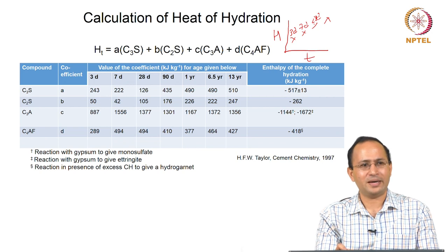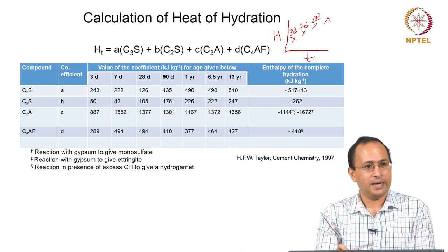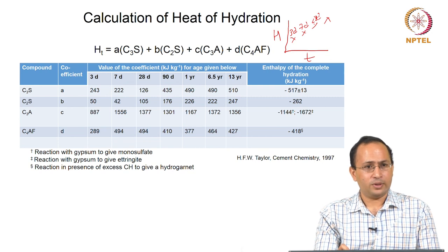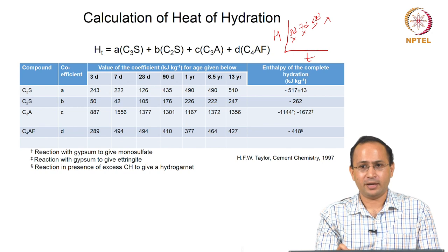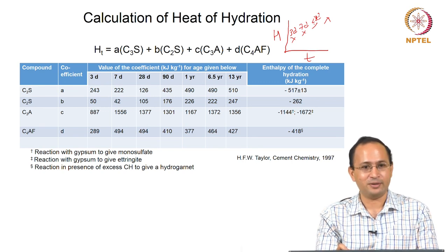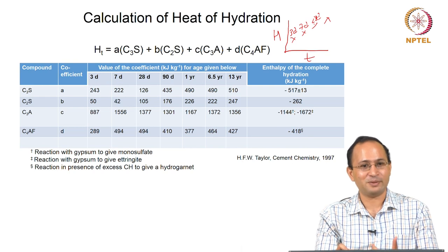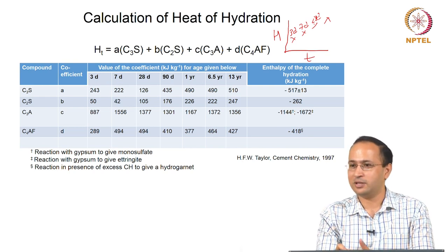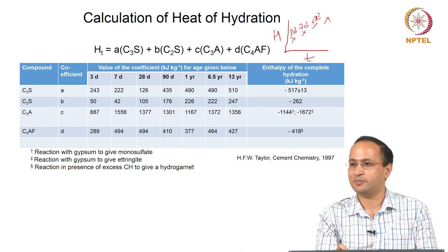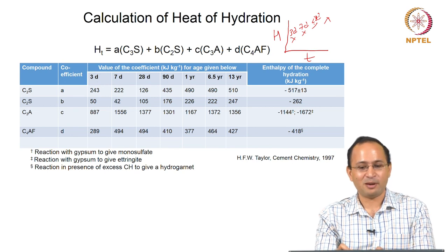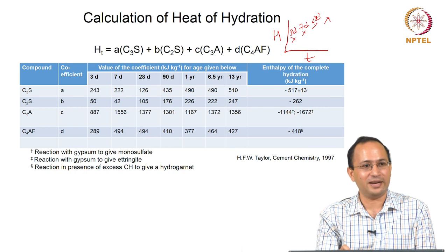At later ages — 28 days, 90 days, 1 year — they used the method of heat of solution. You dissolve your sample in hydrofluoric acid, or a mixture of nitric acid and hydrofluoric acid. You know the heat of solution for your raw cement powder. When 50% of it has hydrated, you use that sample to get the heat of solution, then calculate the difference — knowing the 100% cement heat of solution versus the 50% unhydrated cement — to get the heat of hydration at that time.